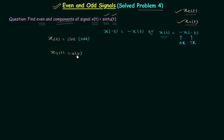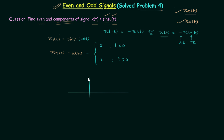Now what about u(t)? u(t) is the unit step signal and we can define u(t) as 0 when t < 0 and 1 when t > 0. Now I will plot the waveform of the unit step signal. When t < 0, u(t) = 0, so it remains 0 till minus infinity, and when t > 0, u(t) = 1, so it remains 1 till infinity.